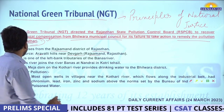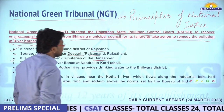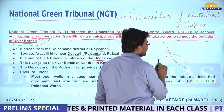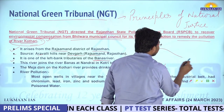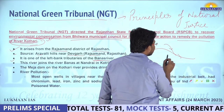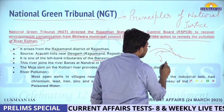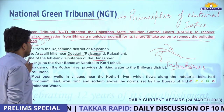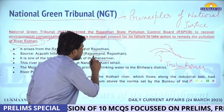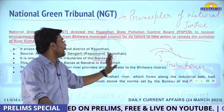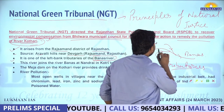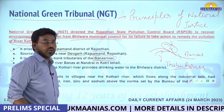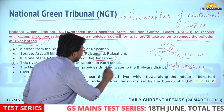River Kothari is one of the left bank tributaries of the Banas River. Tributaries are smaller rivers that add water to a larger river. Kothari River adds water from the left bank to the Banas River, and it joins the Banas at Nandarai in Koti Tehsil.